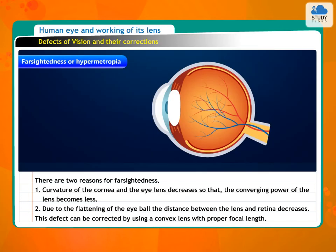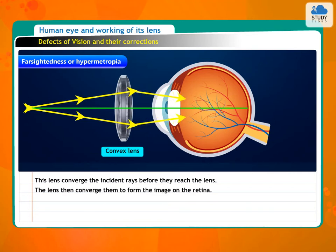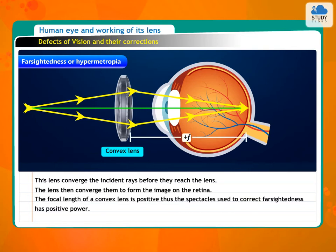This defect can be corrected by using a convex lens with proper focal length. This lens converges the incident rays before they reach the eye lens. The lens then converges them to form the image on the retina. The focal length of a convex lens is positive, thus the spectacles used to correct farsightedness have positive power. The power of these lenses is different depending on the extent of farsightedness.